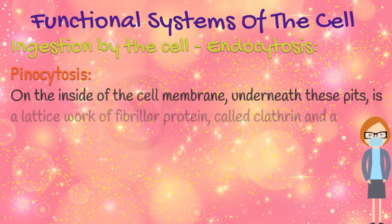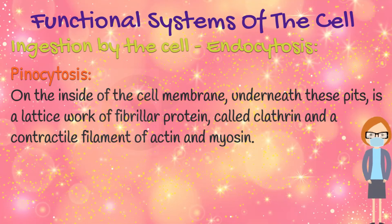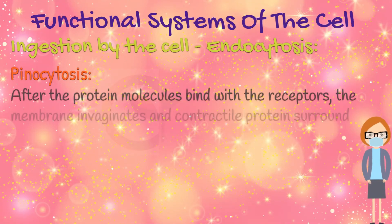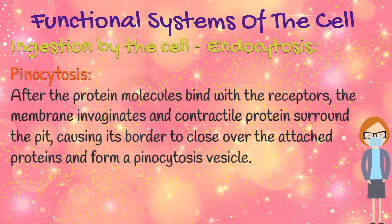On the inside of the cell membrane, underneath these pits, is a lattice work of fibrillar protein called clathrin, and contractile filaments of actin and myosin. After the protein molecules bind with the receptors, the membrane invaginates and contractile protein surrounds the pit, causing its border to close over the attached proteins and form a pinocytosis vesicle.